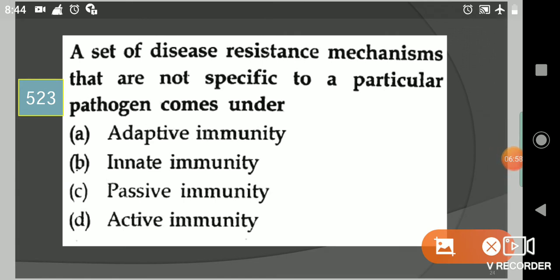Next question: A set of disease resistance mechanisms that are not specific to a particular pathogen comes under? Your options are adaptive immunity, innate immunity, passive immunity, active immunity. Your answer is option B, innate immunity.